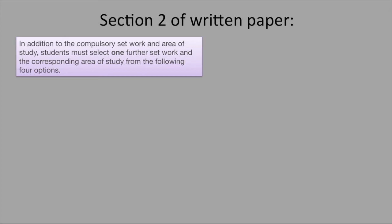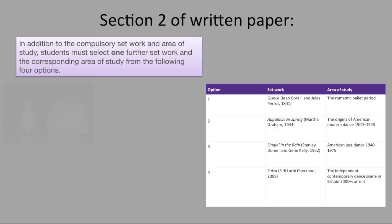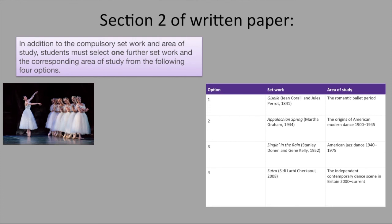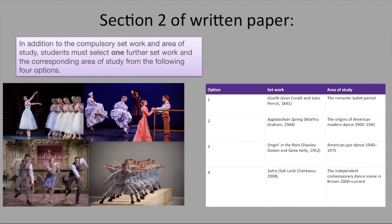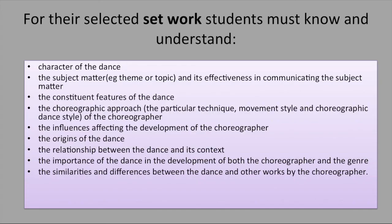In section two of the written paper, in addition to the compulsory set work, students must select one further set work and the corresponding area of study from four options. For their selected set work, students must know and understand the character of the dance, the subject matter such as the theme or topic, and its effectiveness in communicating that subject matter. They must also know the constituent features, the choreographic approach — including the particular technique and movement style of the choreographer and the influences affecting their development — the origins of the dance, the relationship between the dance and its context, the importance of the dance in the development of both the choreographer and the genre, and the similarities and differences between the dance and other works by the choreographer.